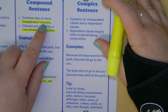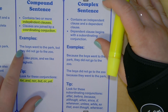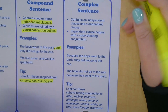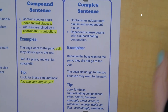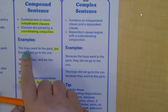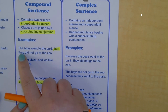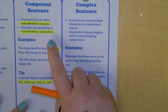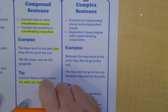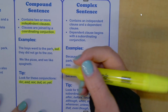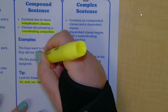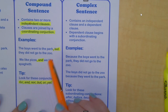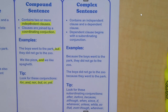These coordinating conjunctions, used with a comma, create a compound sentence by connecting two independent clauses — two simple sentences together. For example: 'The boys went to the park, but they did not go to the zoo.' 'The boys' is your subject, 'went to the park' is your predicate, 'they' is your subject, 'did not go to the zoo' is your predicate. Another example: 'We like pizza, and we like spaghetti' — comma with coordinating conjunction.